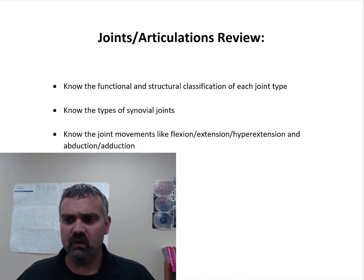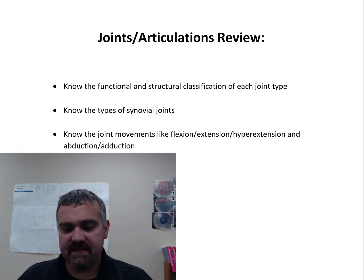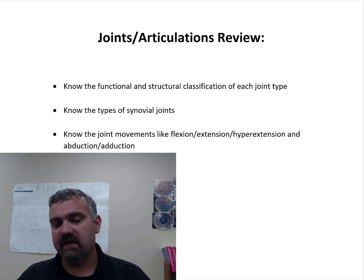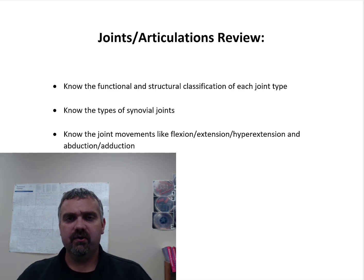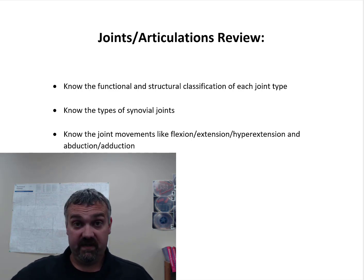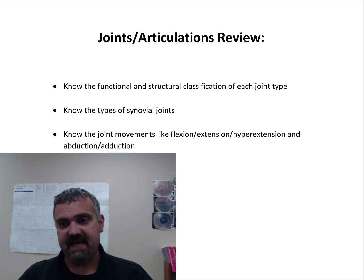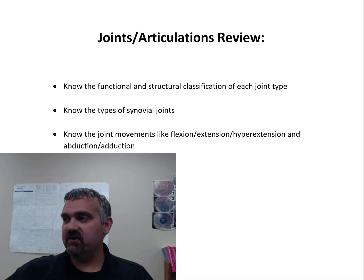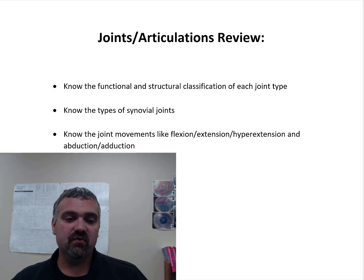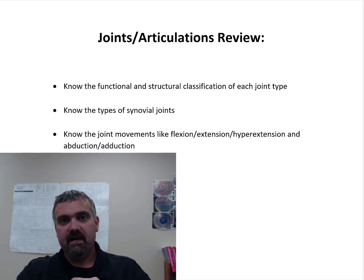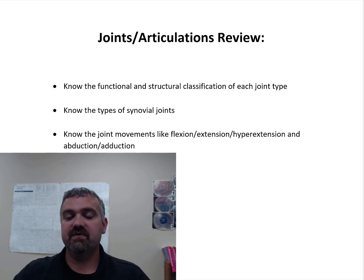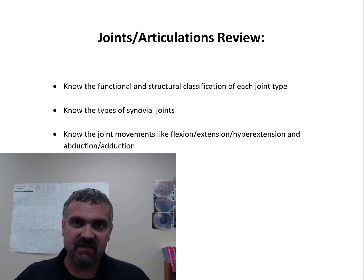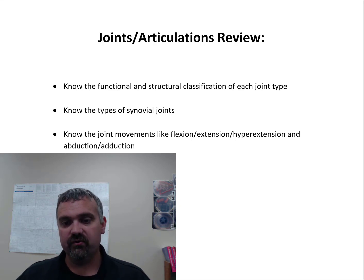Know the types of synovial joints. We break these down into uniaxial, biaxial, and multiaxial — or triaxial — joints. Uniaxial joints think like a hinge joint, like the elbow where the ulna and humerus attach, freely movable in one plane. A biaxial joint — like the wrist — allows flexion/extension and abduction/adduction, so freely movable in two planes. Triaxial or multiaxial joints are your ball and socket joints — the shoulder and hip.